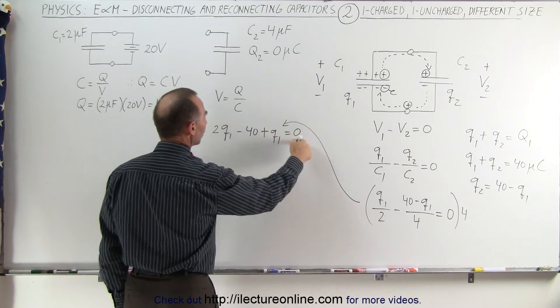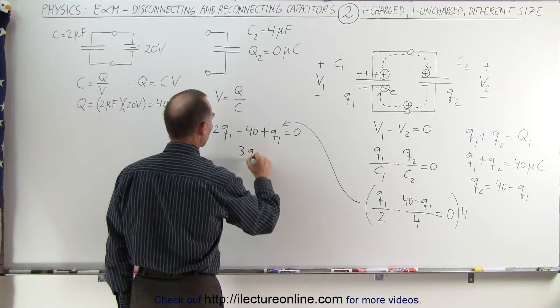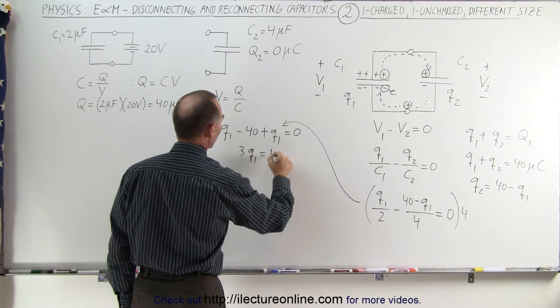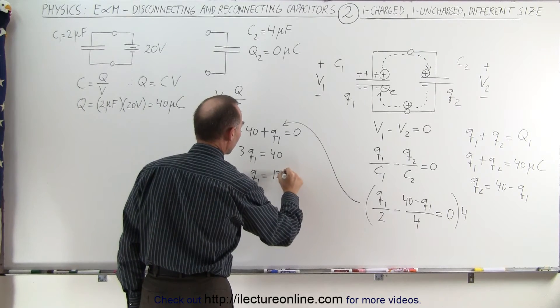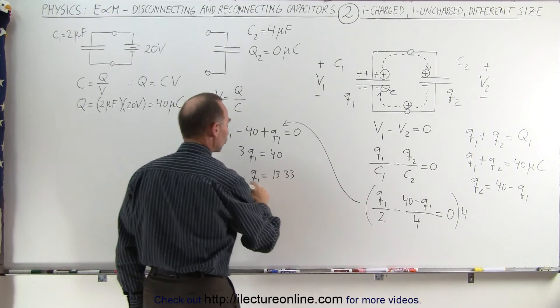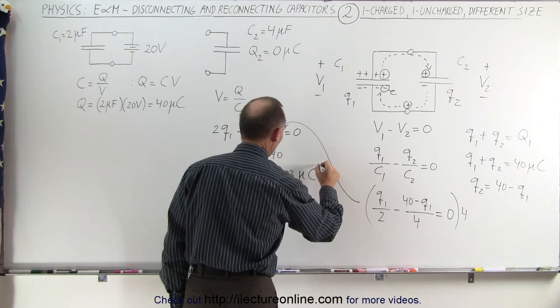Combining these together, moving the 40 across, we get 3Q1 is equal to positive 40, or Q1 is equal to 40 divided by 3, which is 13.33, and of course charge being micro coulombs.